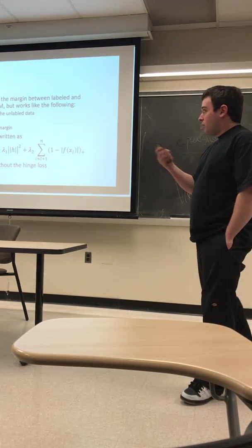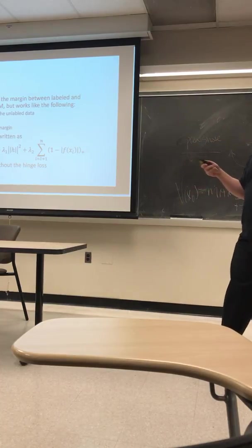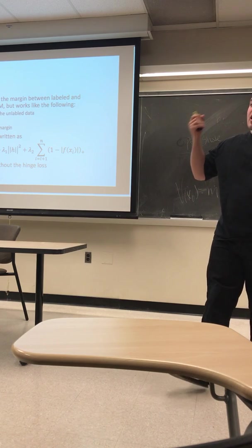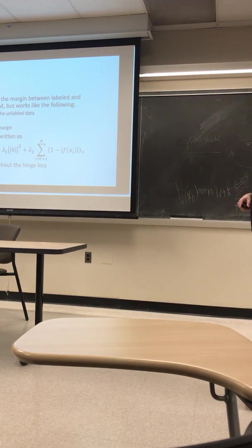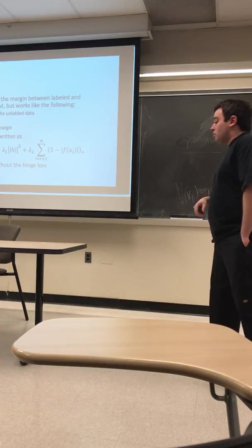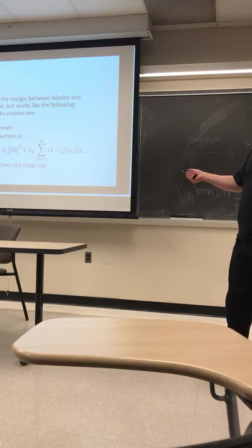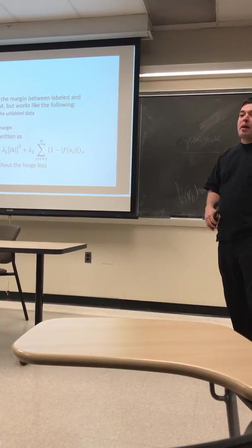So it still works to maximize the margin between labeled and unlabeled data. But it builds an SVM for each labeling. And again, here's the objective function in case you want to write it into something like CVX again. But we don't have our loss term. We have this lambda 1h squared term that acts as our penalty term.